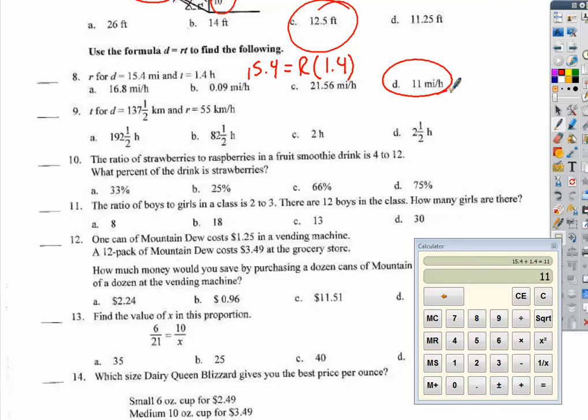For question 9. Same deal. I have a distance of 137.5 and that's equal to R times T. I'm multiplying 55 times something to get 137.5, so go ahead and divide it. 137.5 divided by 55 and I get two and a half hours. D.